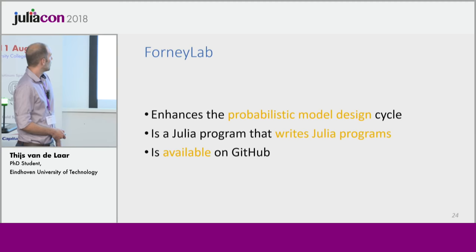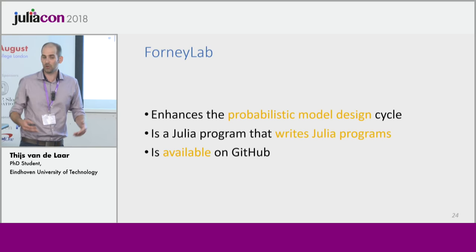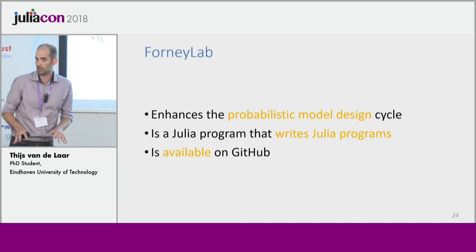To summarize: we've developed ForniLab, a Julia package that enhances the probabilistic model design cycle. In essence it's a Julia program that writes Julia programs, which is very convenient because you can hack away in the code itself and adjust it to your own liking. Most importantly, it's available on GitHub.